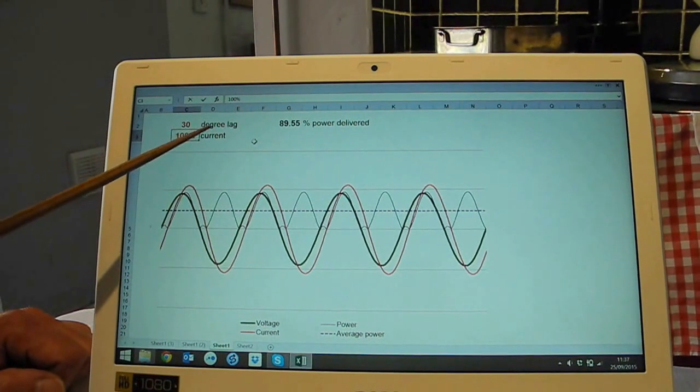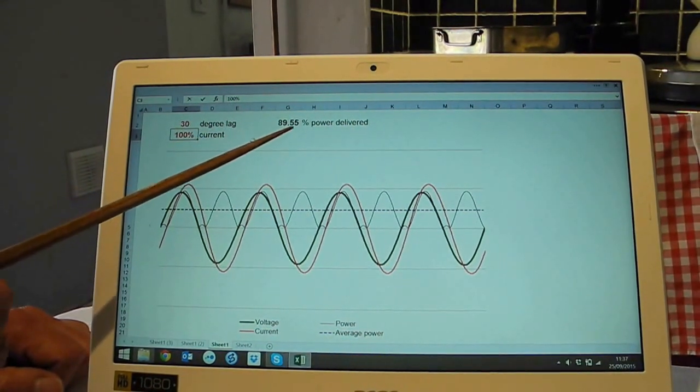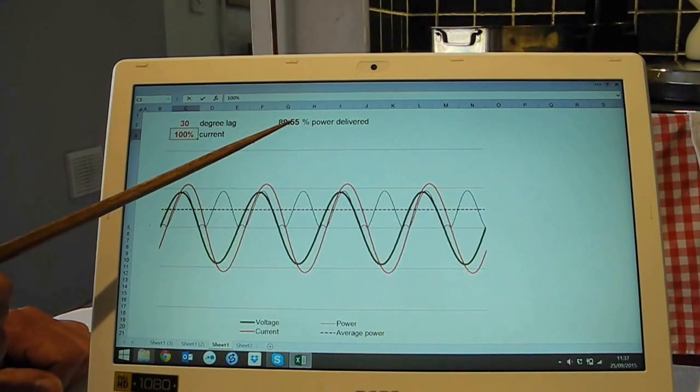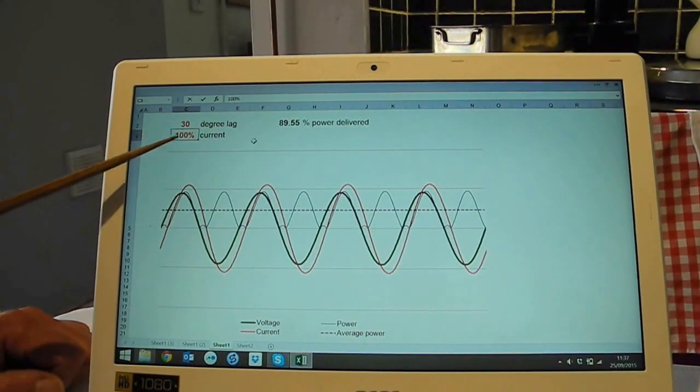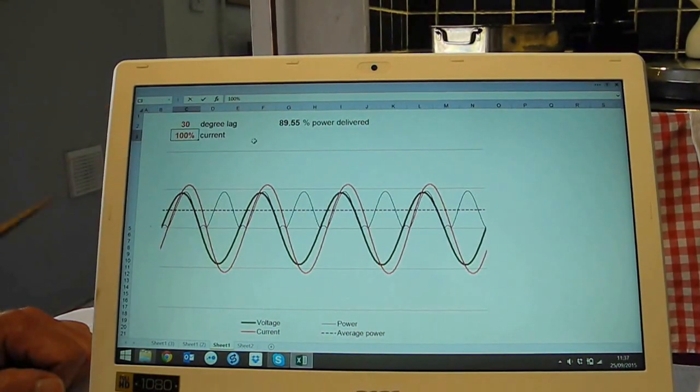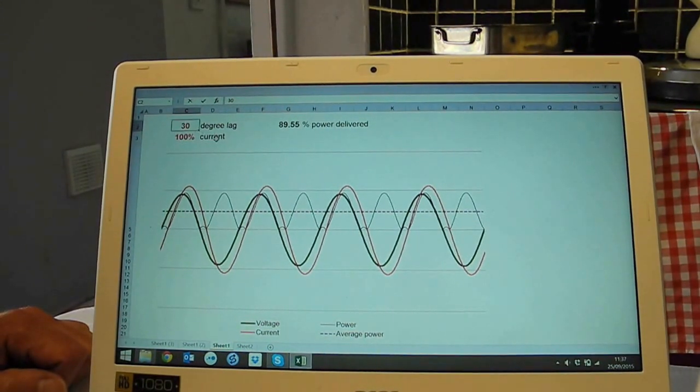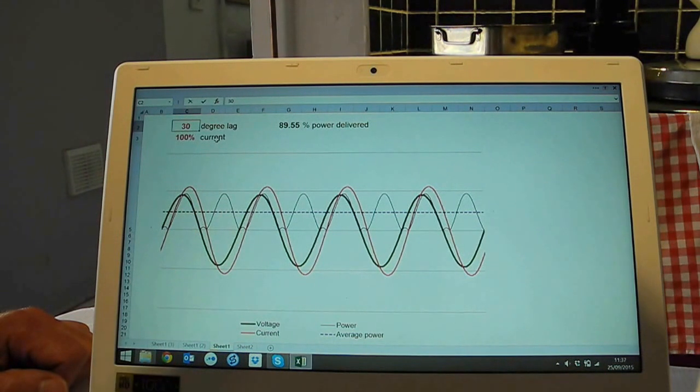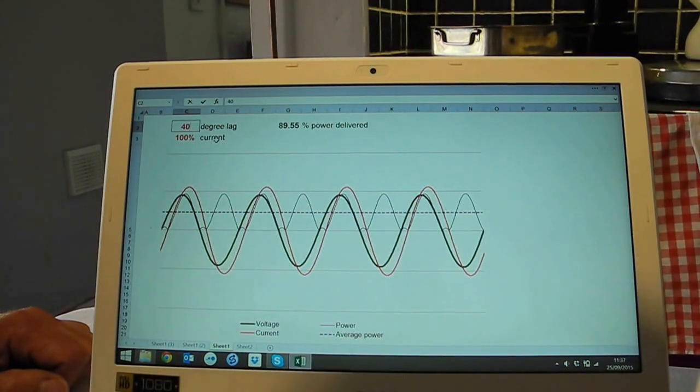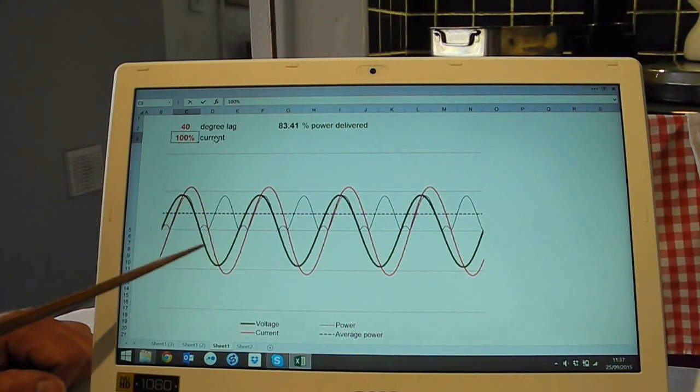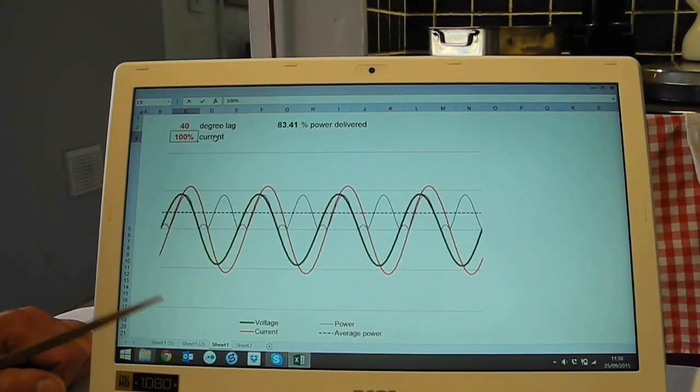We can see here that under these conditions only about 90% of the expected power is delivered by the full current and the full voltage together. If it gets worse, if I experience 40 degrees of lag, now the current is lagging even further behind the voltage.